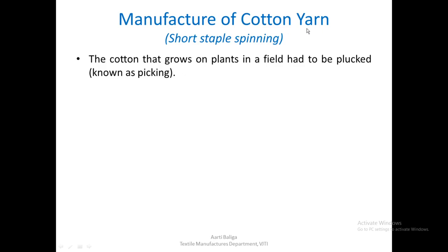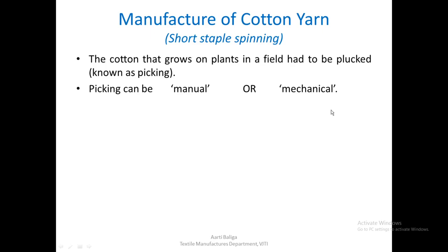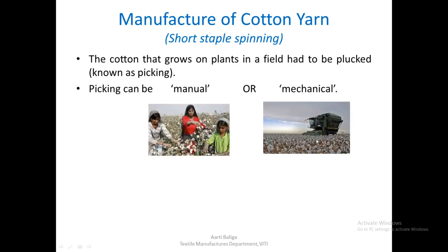Let us now look at the manufacture of cotton yarns on a short staple spinning system. If we understand cotton yarn production, most other fibers can be processed on the same system with slight variations in settings. The cotton that grows on plants in a field has to be plucked — a process known as picking. Picking can be either manual or mechanical.